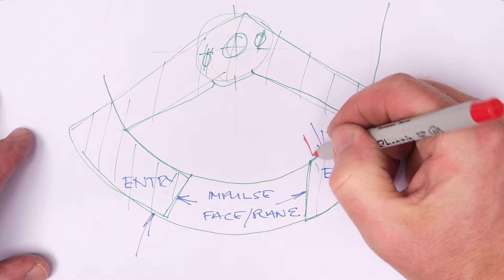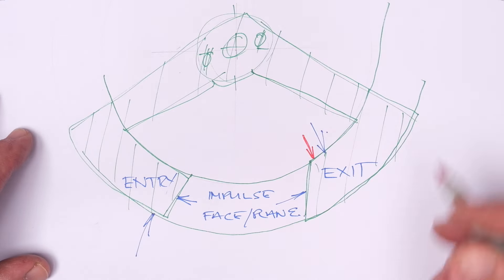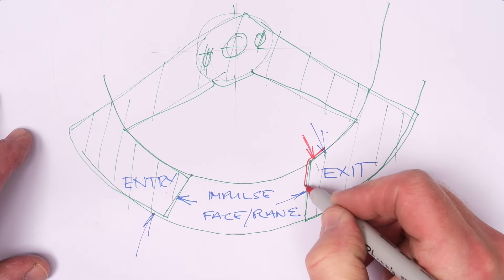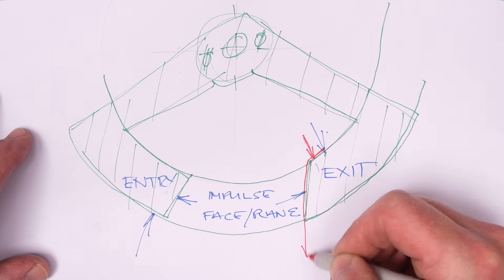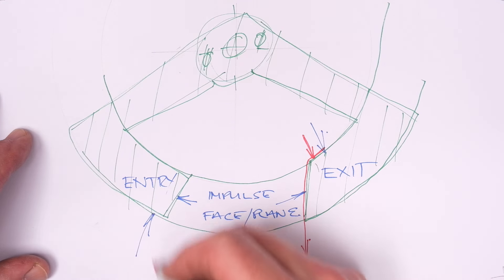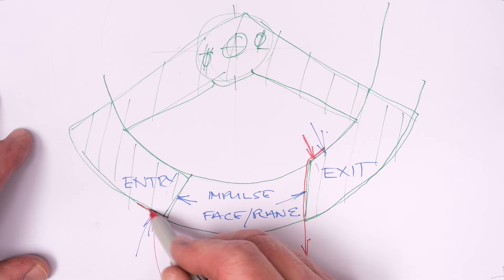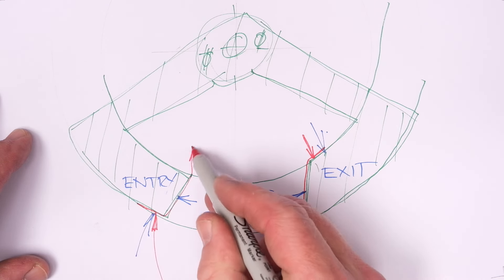So the escape wheel tooth lands on one of the resting faces, supplementary arc or overswing as some people call it takes place, then there's impulse drop and the process repeats itself.